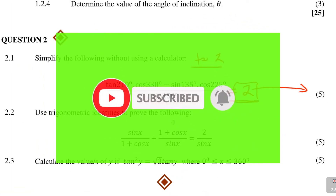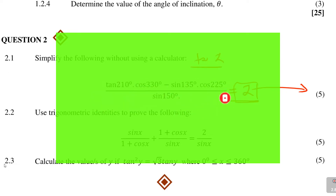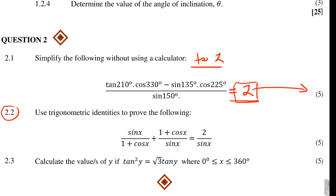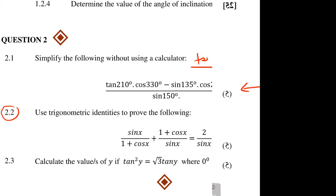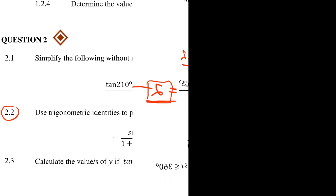Alright, 2.2. Moving on to the next one. 2.2 says: use trigonometric identities to prove that. That is 5 marks.